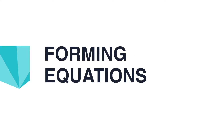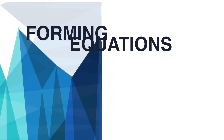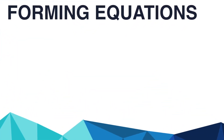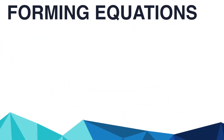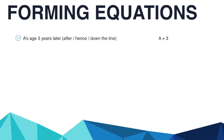Forming equations — how can we form different equations depending upon the information given in questions. There are several possibilities: A's age 3 years later, or hence down the line, can be written as A plus 3.